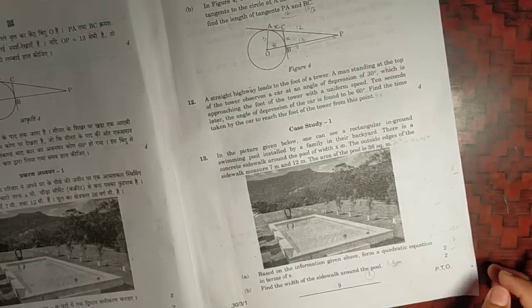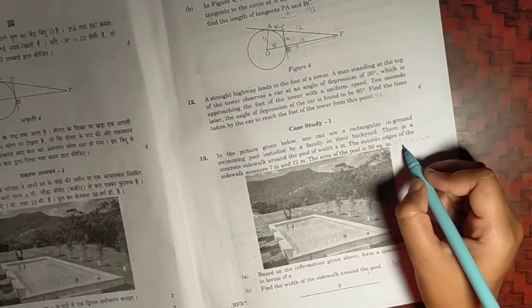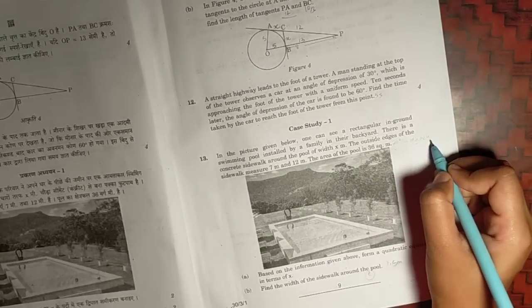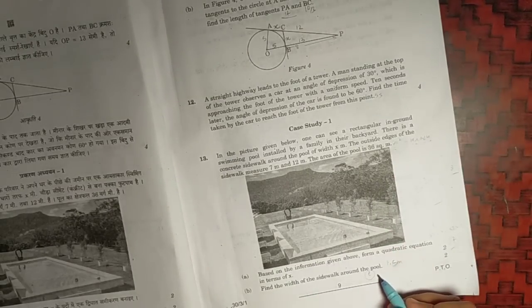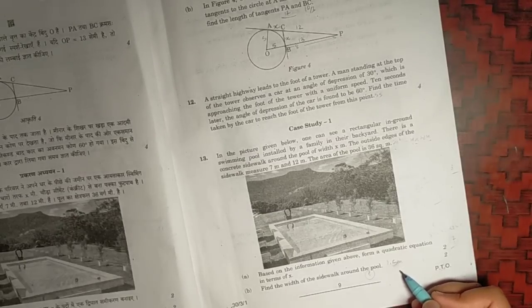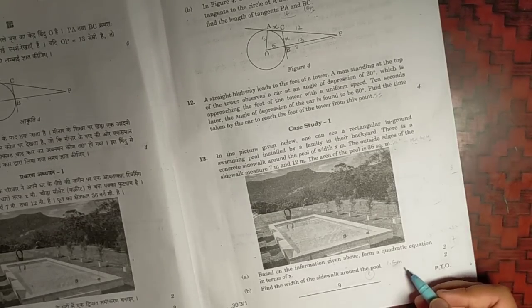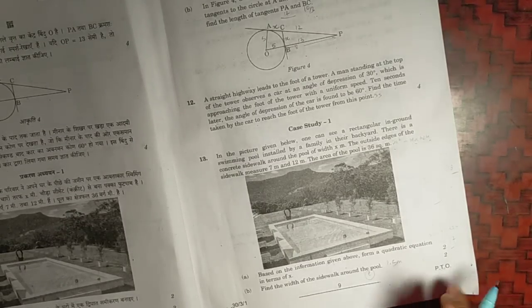Thirteenth question, the equation will be 2x squared minus 19x plus 24, and the width of the sidewalk will be 1.5 meter. There will be another answer, 8 also, but it will not be taken as the length would come out to be negative.